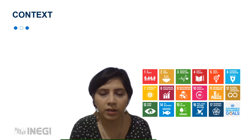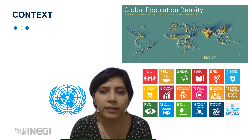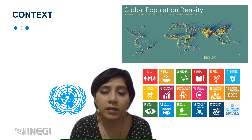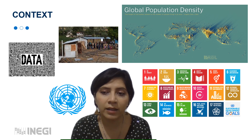When the 2030 Agenda for Sustainable Development was adopted in 2015, more than half of the world's population lived in urban areas. According to United Nations projections, it is estimated that by 2036, 62% of the world's population will reside in urban areas. In addition, developing countries face high growth rates of urban poverty. However, there are many uncertainties related with these estimates, such as data availability and variations in definitions.